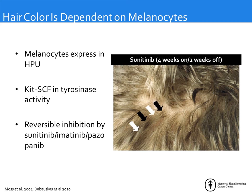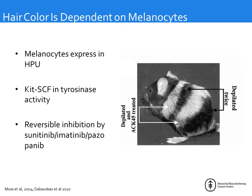Hair color is given by melanocytes within the hair pigmentation unit. Kinase inhibitors that block KIT — such as sunitinib, imatinib, and pazopanib — lead to temporary depigmentation of the hair. With sunitinib's characteristic four-weeks-on, two-weeks-off schedule, you can see periodic de- and re-pigmentation. This differs from the depigmentation seen with checkpoint inhibitors, which is more of a permanent hair depigmentation.